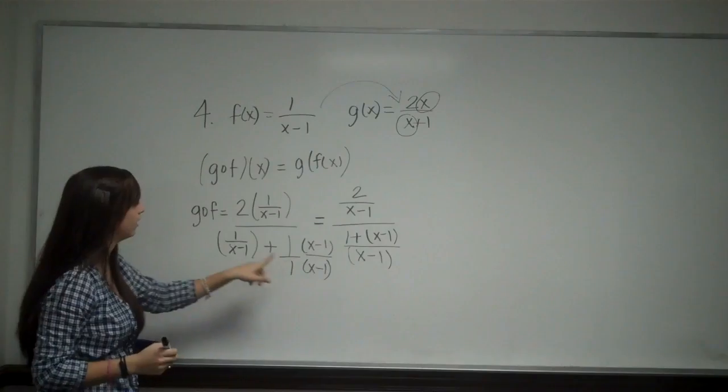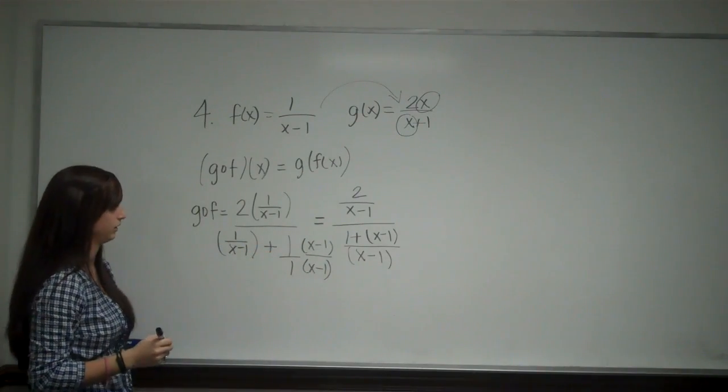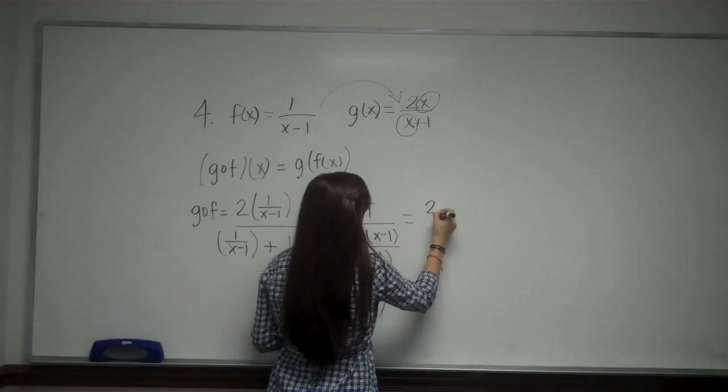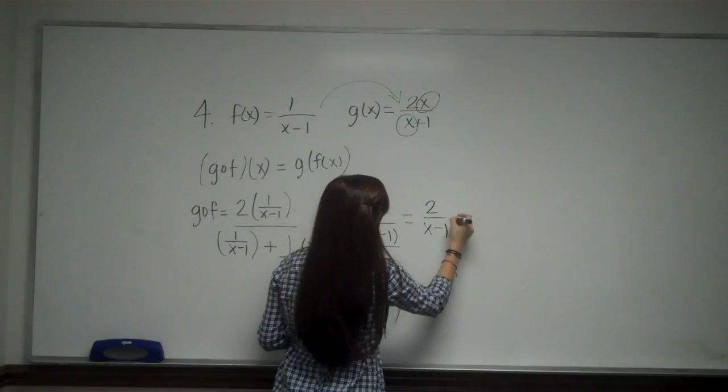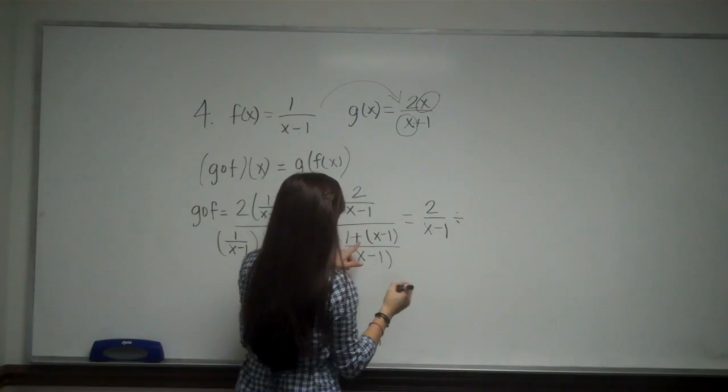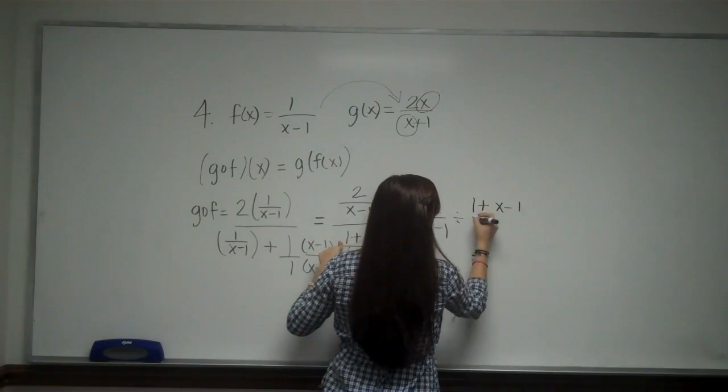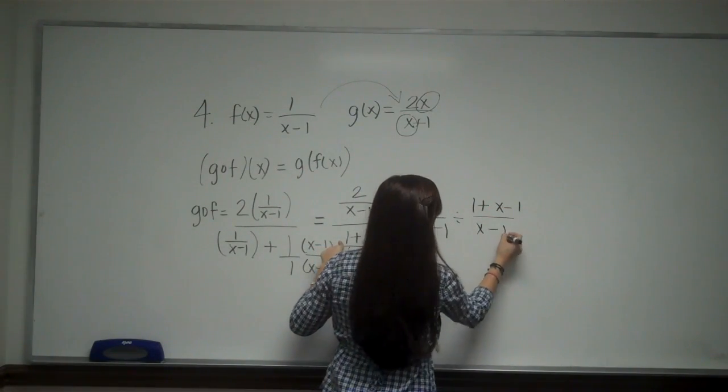So because I now have a common denominator, I can add my numerators. Now I'm going to rewrite this as 2 over x minus 1 divided by - now my 1's are going to cancel - 1 plus x minus 1 over x minus 1.